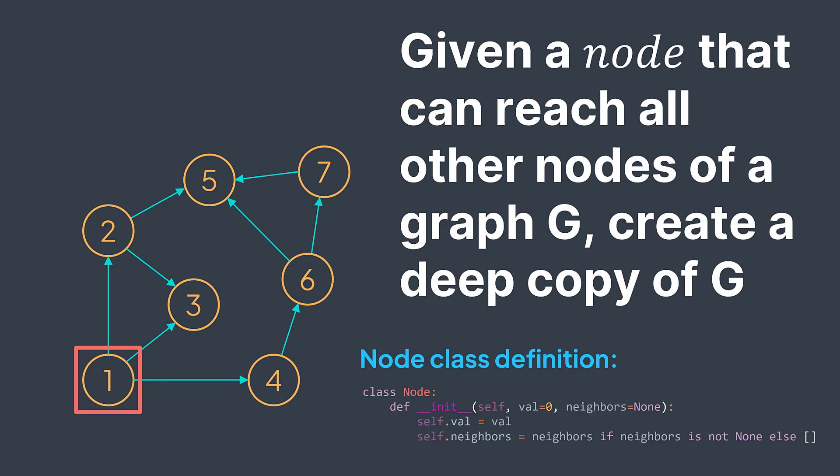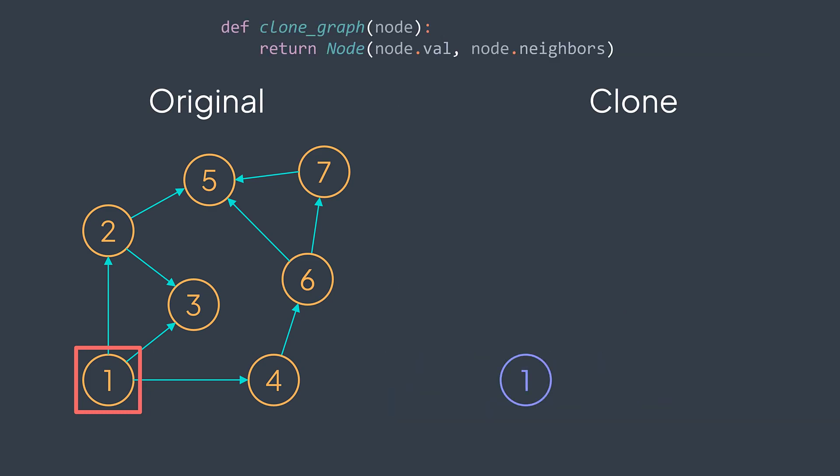To solve this problem, we can think of creating a new node that has the same value as the input node and the same neighbors.